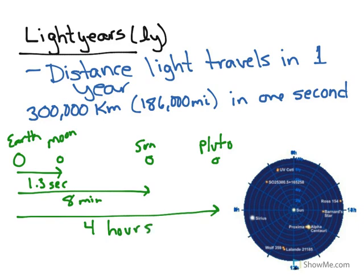Now that means that the light coming to us from the Moon takes 1.3 seconds. So when we are looking at the Moon, we are seeing it as it was 1.3 seconds ago. The Sun, we are seeing it as it was 8 minutes ago. Pluto, we are seeing it as it was 4 hours ago.